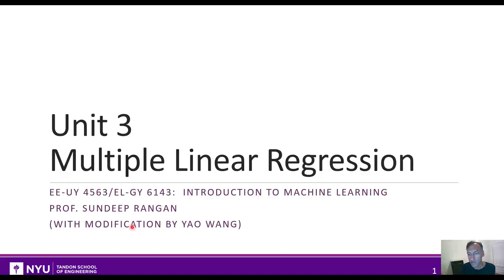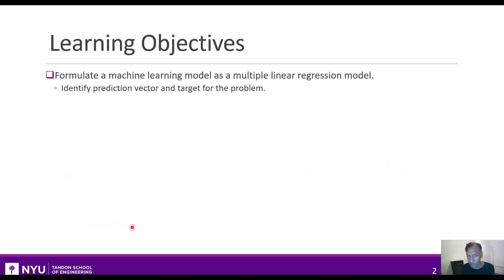Multiple linear regression is probably one of the most fundamental techniques in machine learning, at least in the sense that if you have a regression problem, this should be your go-to method. If you know how to use it well, it can serve you well for most problems, particularly simple ones.